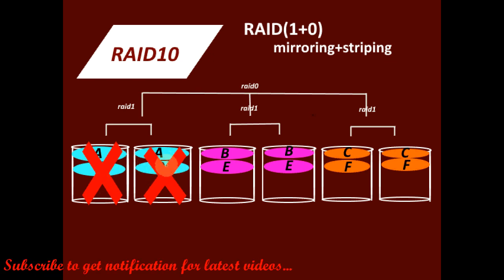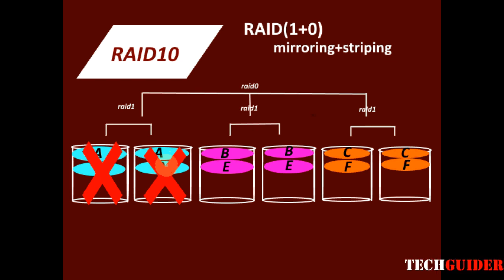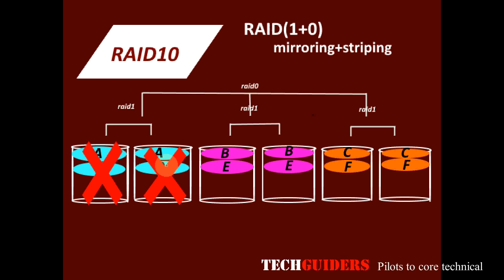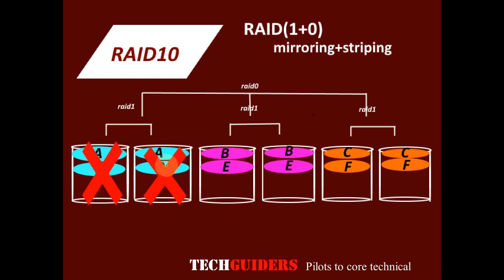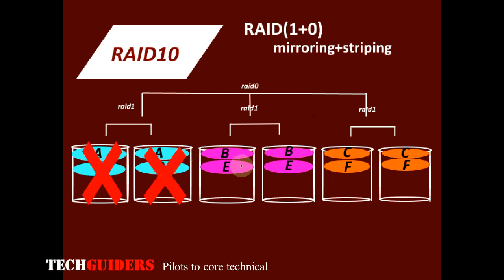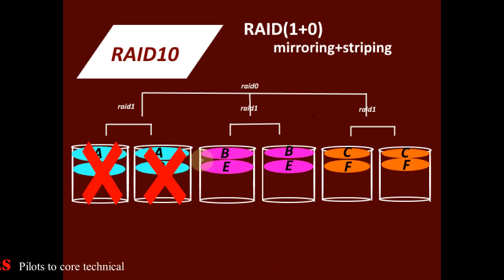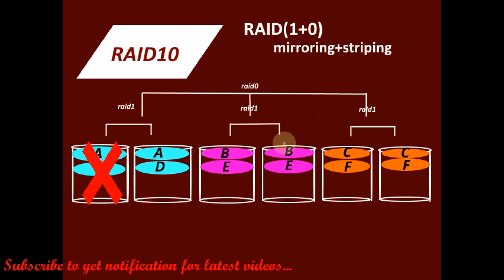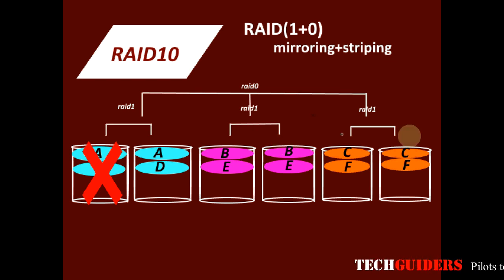In case of failure, data rebuilding is easier in RAID 10 compared to RAID 5, 4, 3, and 2. You just need to copy the data from the surviving mirror to the new replacement disk — no calculations involving parity or Hamming code are required.